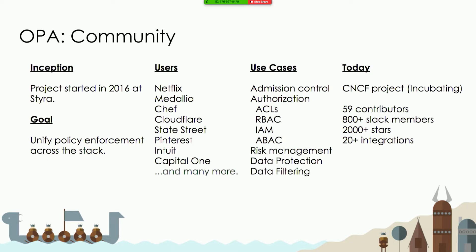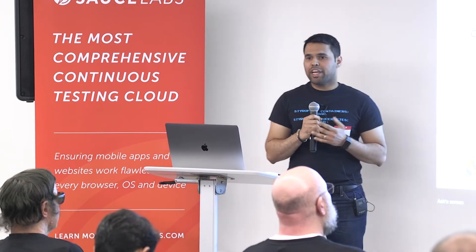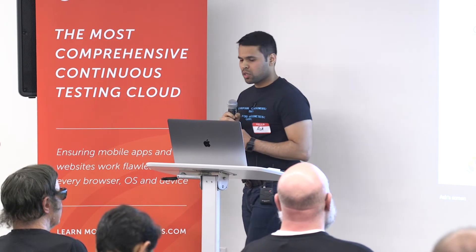The project was started in 2016 at Styra, and the goal has been to unify policy enforcement across the stack. One of the earliest adopters of OPA was Netflix, and they use OPA for API authorization of their HTTP and gRPC APIs. Another company, Medallia, uses OPA for risk management in Terraform. Chef uses OPA for API auditing as well as API authorization.